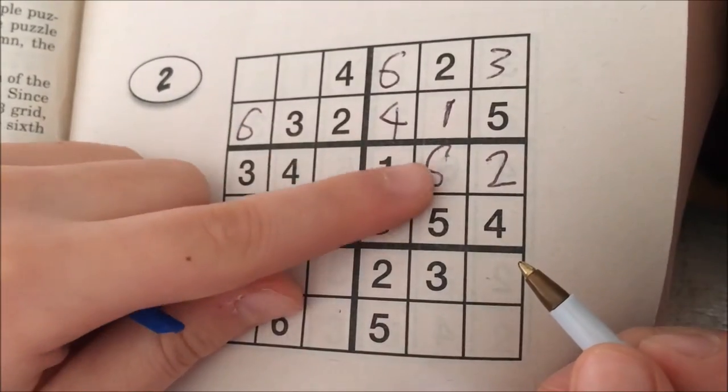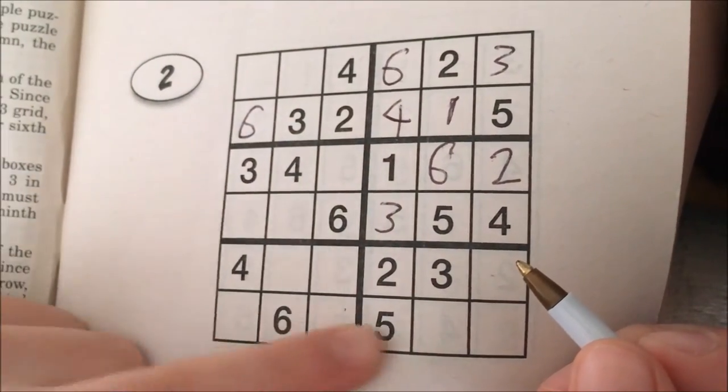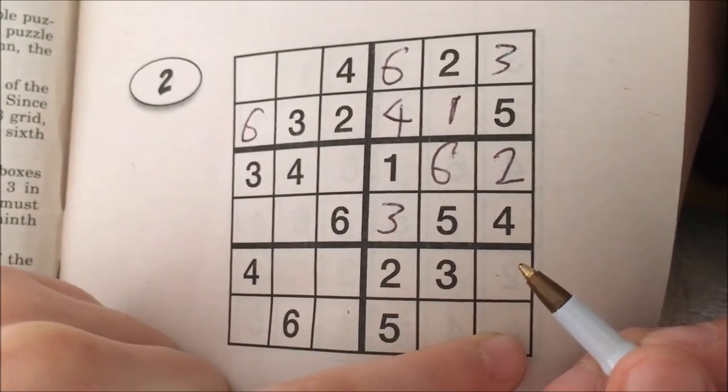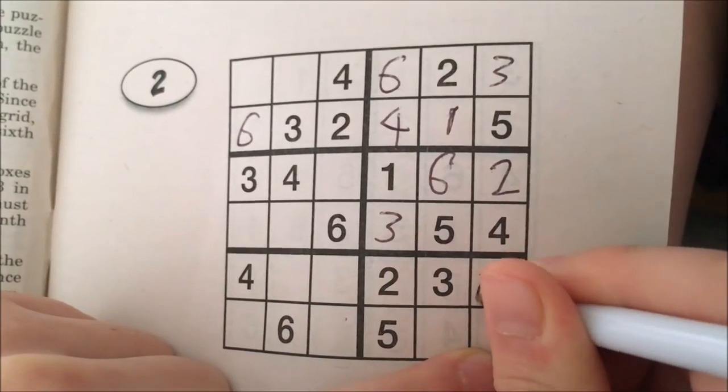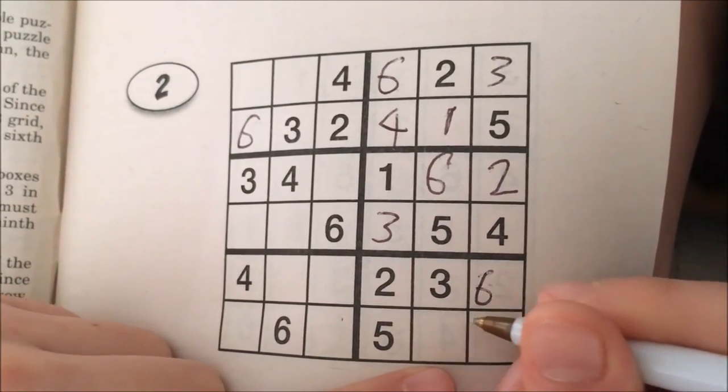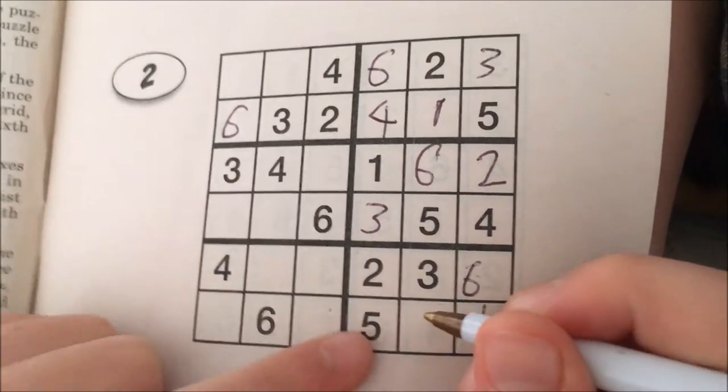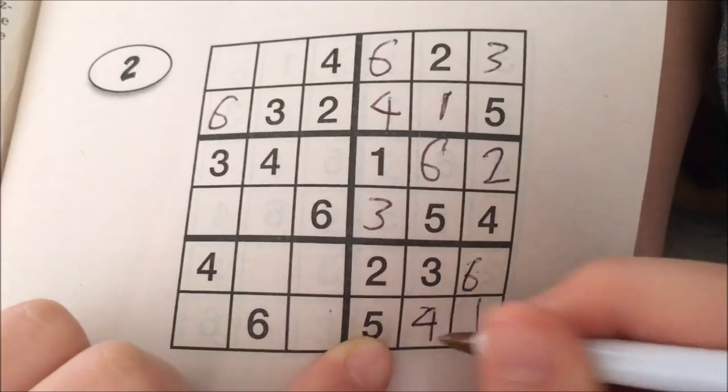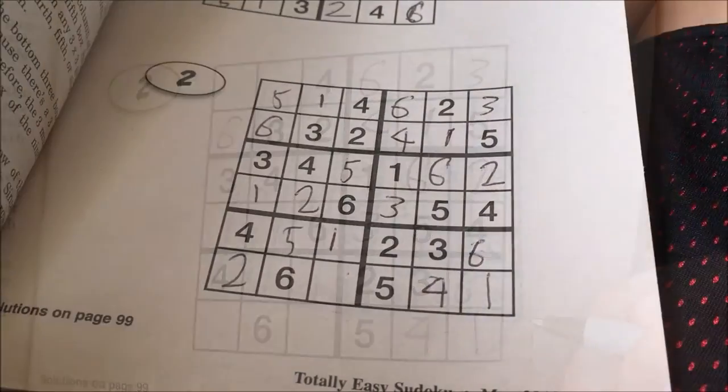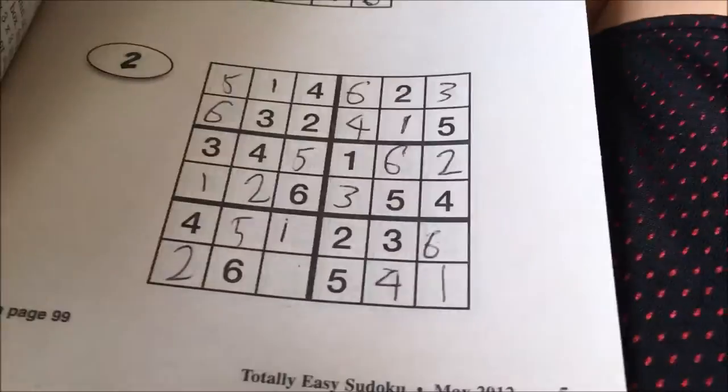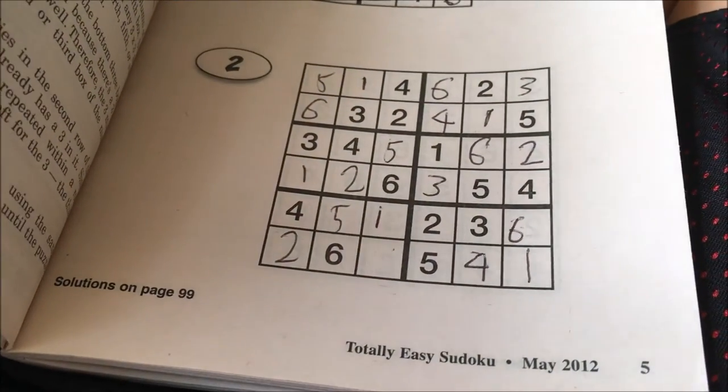Six cannot go here or here, so it has to go right here. One cannot go here, so it has to go right here. Missing one is number four, so four goes right here. And the last number left is number three.